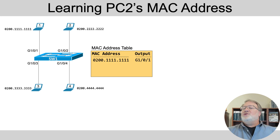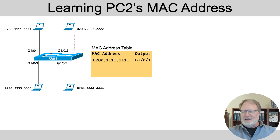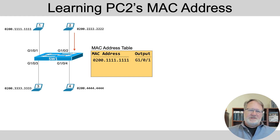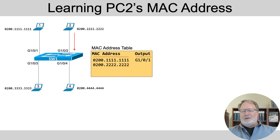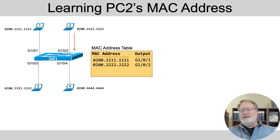Now say PC2 was the destination of that flooded frame, so it received it and sends a reply back. For learning, the switch looks at the source MAC of that reply — the address with all twos in it — and adds a MAC table entry: 0200.2222.2222 on port Gig 1/0/2, the port that frame arrived on. Basically, any time a frame arrives, it's the source MAC along with the arrival port that gets added to the table. Similarly, entries for PC3 and PC4 would be added in the same way.